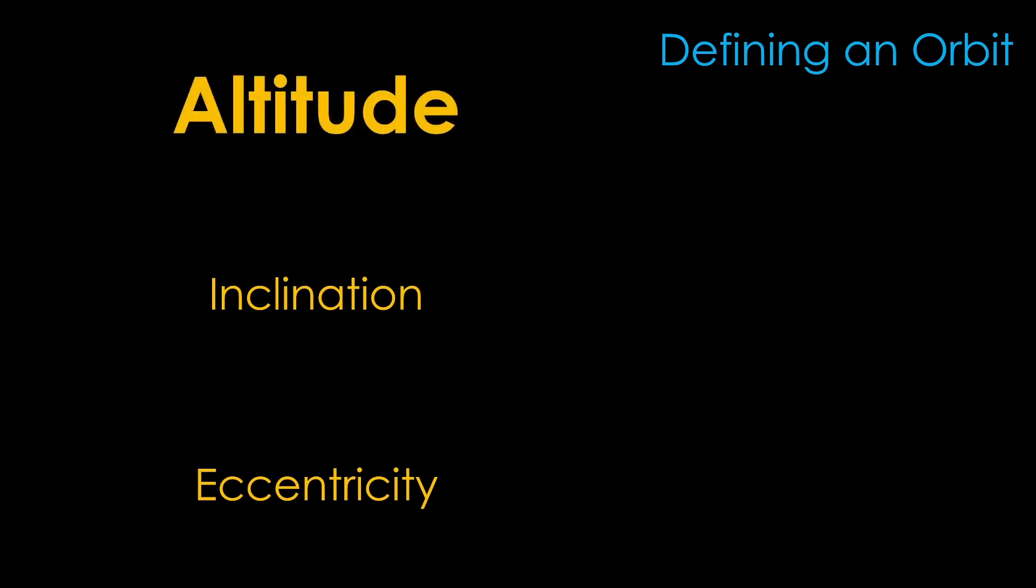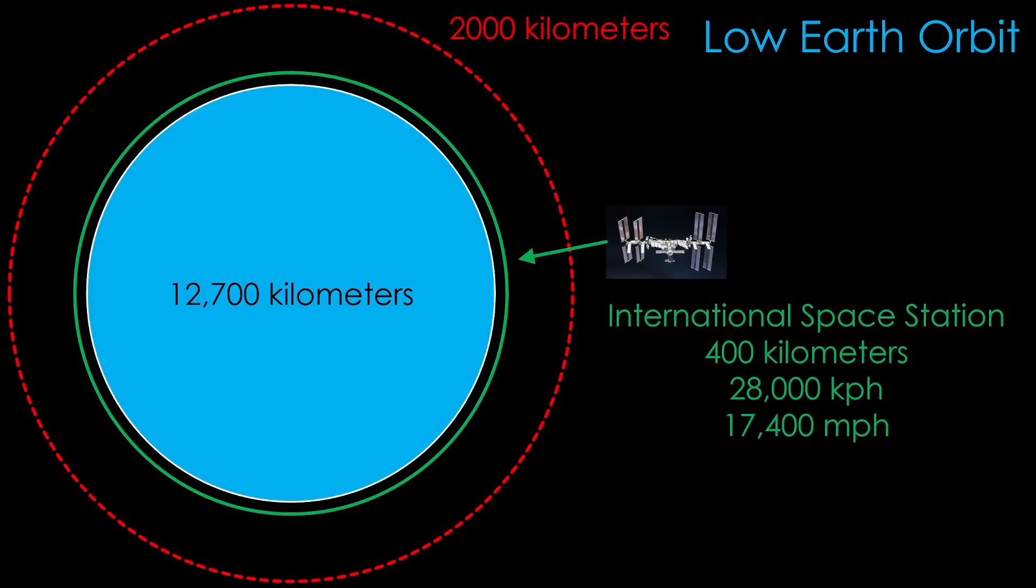Altitude is the first factor. We'll start with low Earth orbit. The Earth is about 12,700 kilometers in diameter, so a low Earth orbit of less than 2,000 kilometers is pretty close to the Earth's surface. Low Earth orbit is above most of the atmosphere, but there is still enough atmosphere to slow satellites down, so the space station needs to be reboosted periodically to keep from re-entering the atmosphere.